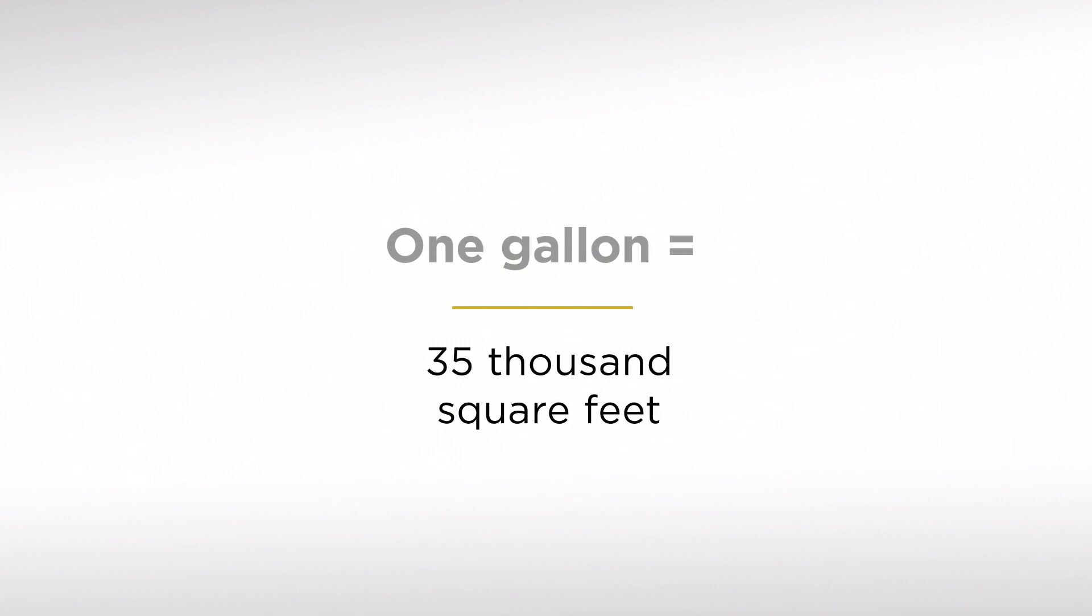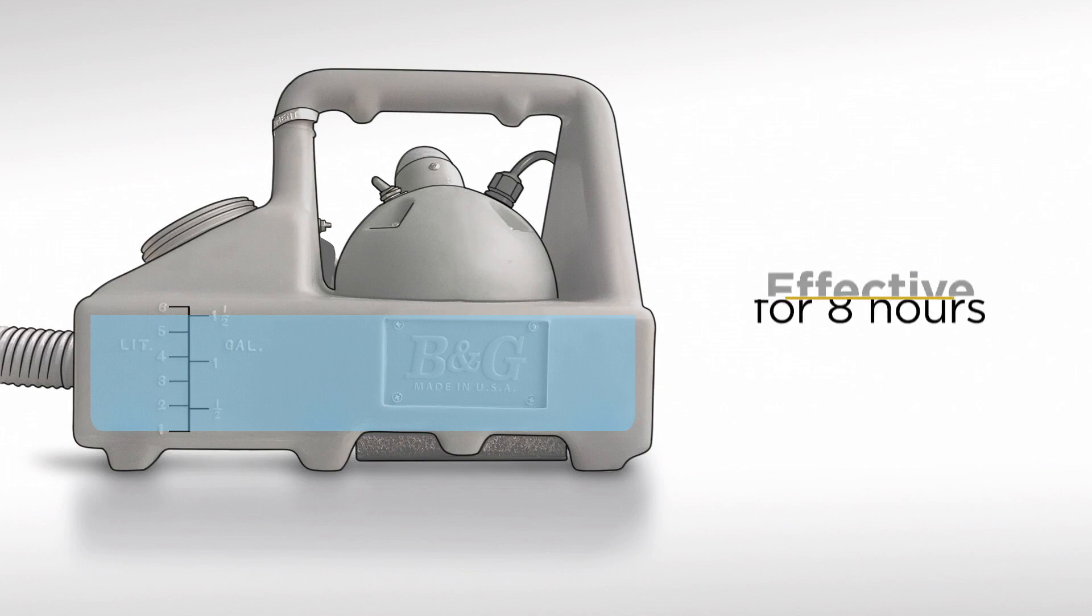One gallon can fog 35,000 square feet. The solution will lose its effectiveness after 8 hours, so make only as much as you need at one time.